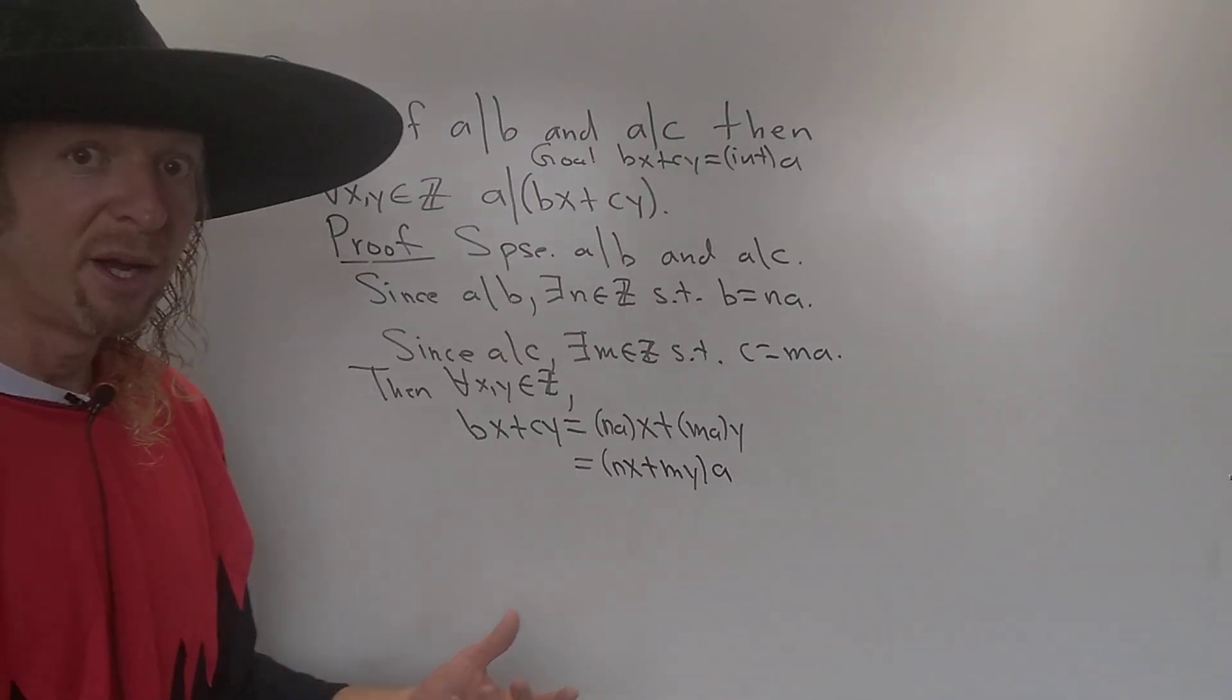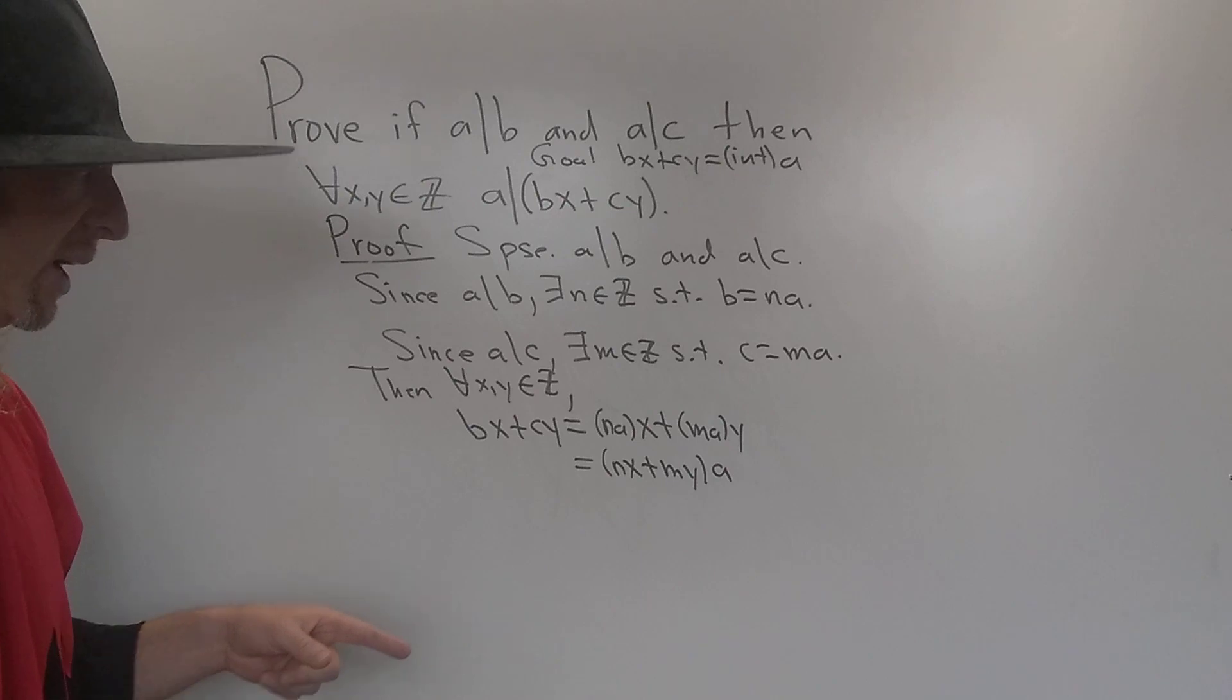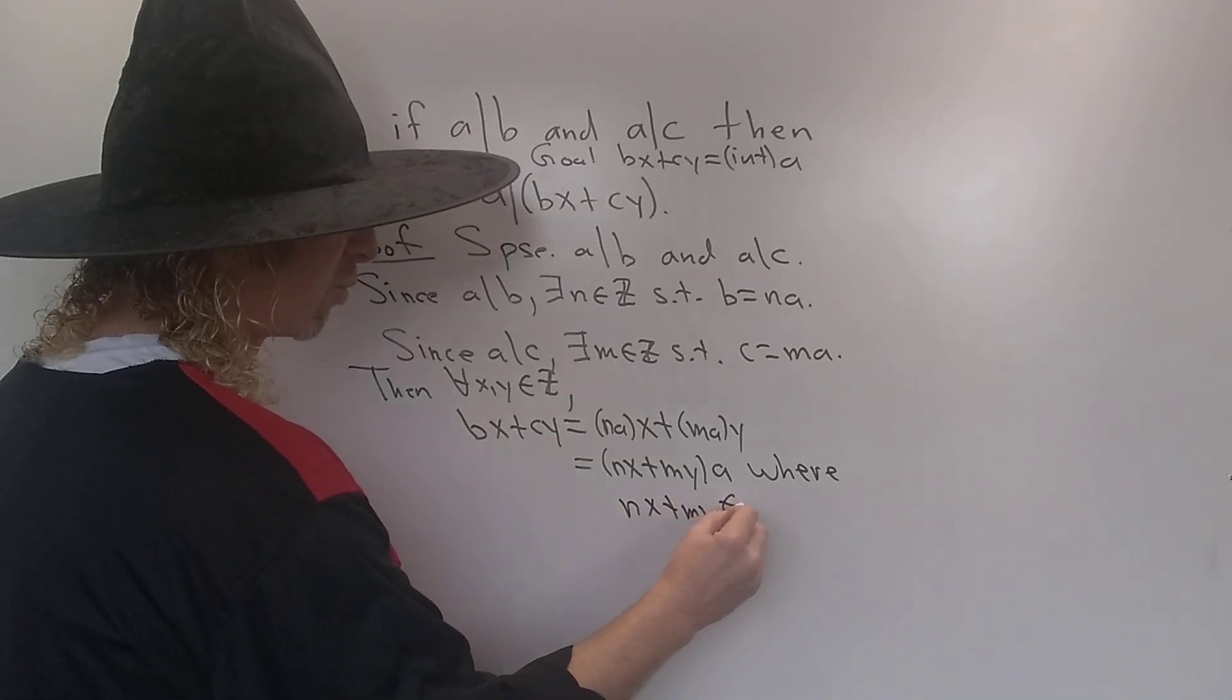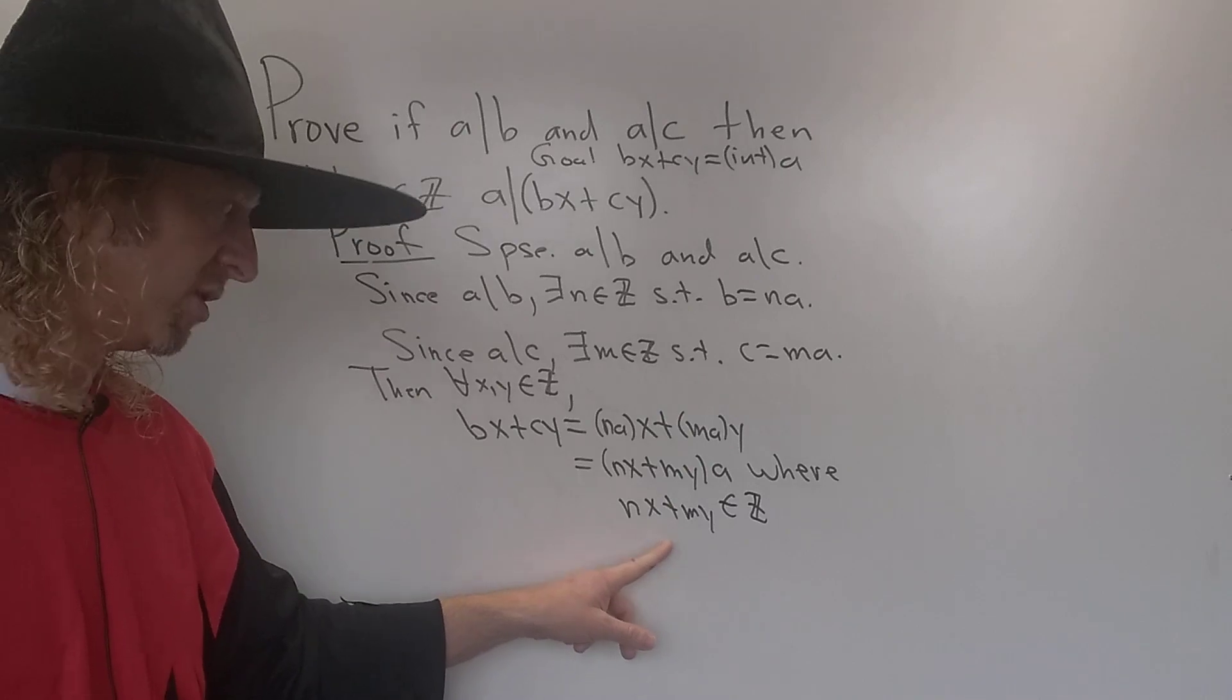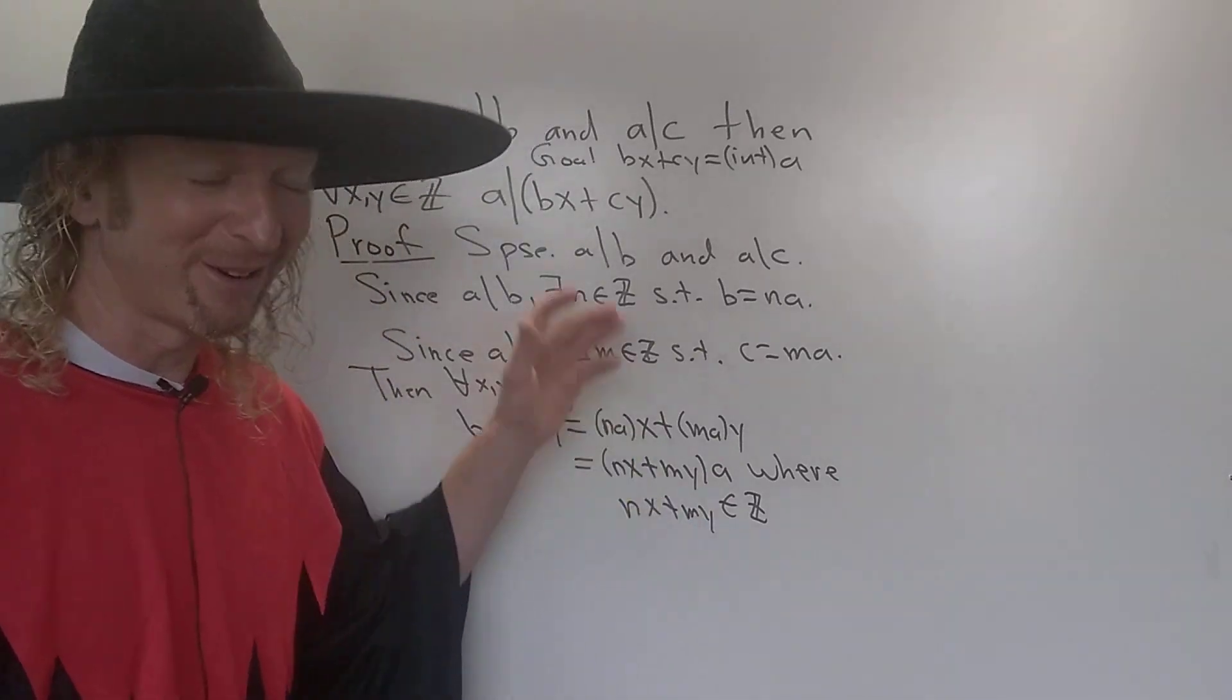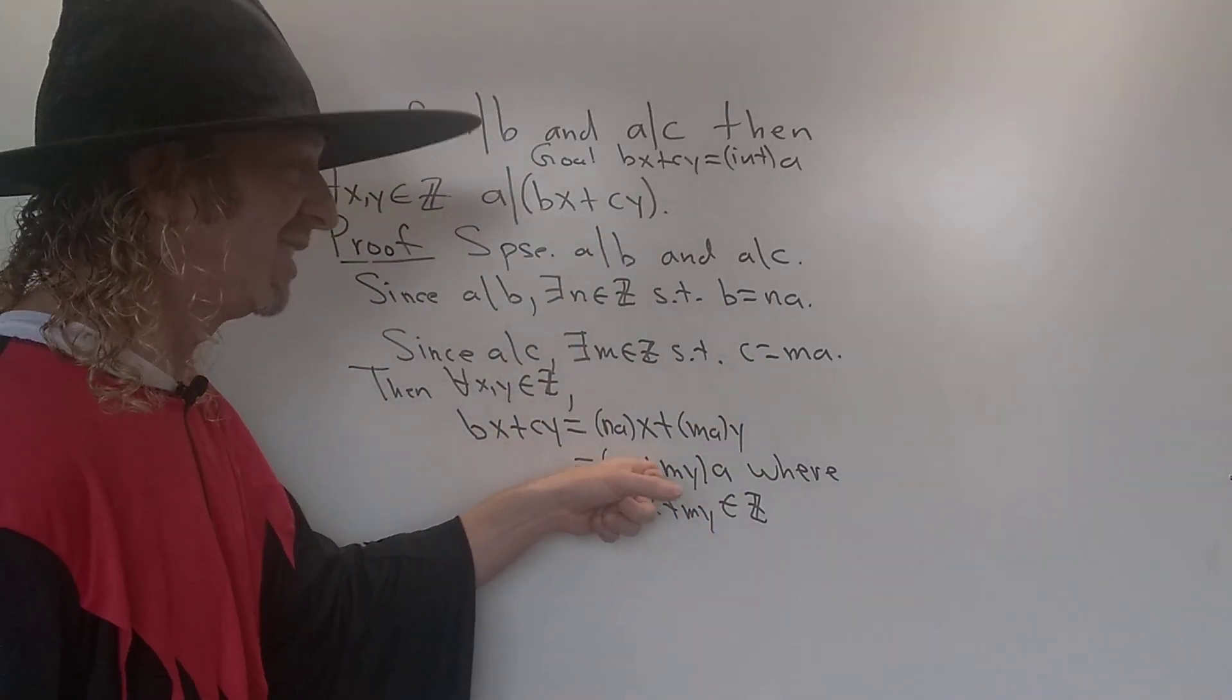So this is an integer, where nx plus my is an integer. Why? n is an integer, x is an integer, therefore the product is an integer. m is an integer, y is an integer, therefore the product is an integer. Integer plus integer is an integer. So it's an integer. So we showed that bx plus cy is equal to an integer times a.